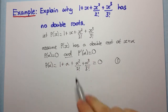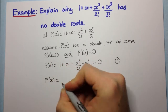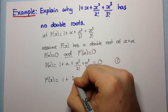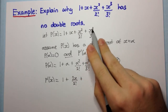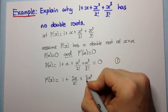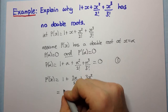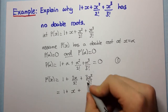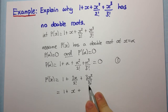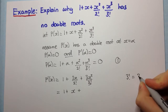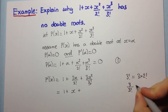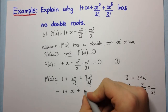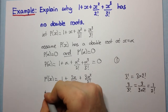For p dash alpha, first we need to differentiate p of x. P dash x: the derivative of 1 is 0, the derivative of x is 1, the derivative of x squared over 2 factorial is 2x over 2 factorial, and the derivative of x cubed over 3 factorial is 3x squared over 3 factorial. Simplifying, 2 over 2 factorial is just 1, giving x, and 3 over 3 factorial — since 3 factorial equals 3 times 2 factorial — gives x squared over 2 factorial. So p dash x equals 1 plus x plus x squared over 2 factorial.